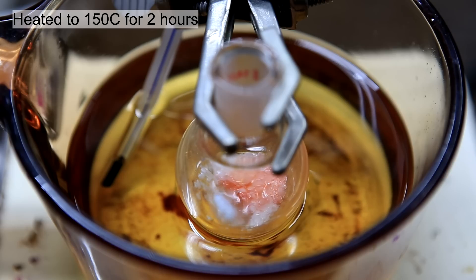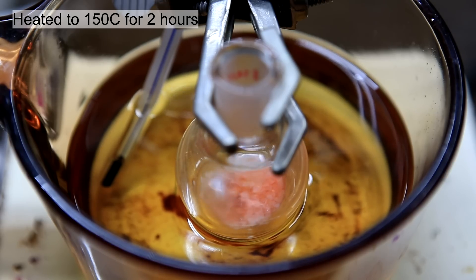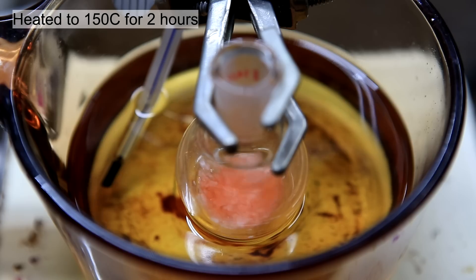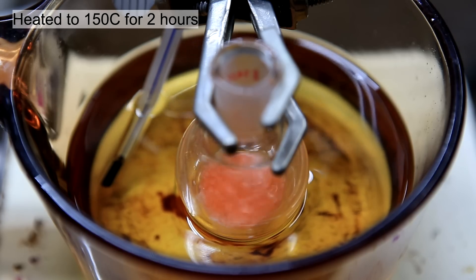As the heat increases, the phenol should melt and the mixture should liquefy. At this point you can already see the red color of phenolphthalein forming.